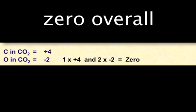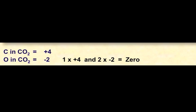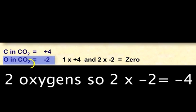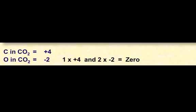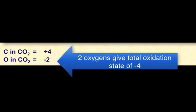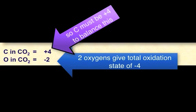In this particular molecule, each of the oxygen atoms has an oxidation state of minus two. Two of those together will make minus four, so we've got to balance that out with the carbon. So if it's going to be neutral overall, the carbon must have an oxidation state of plus four. They need to balance.